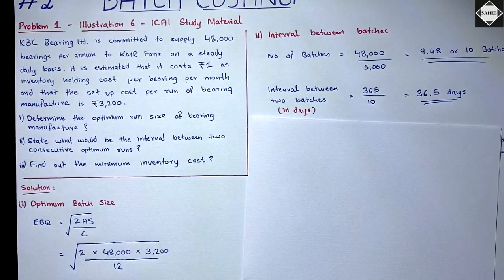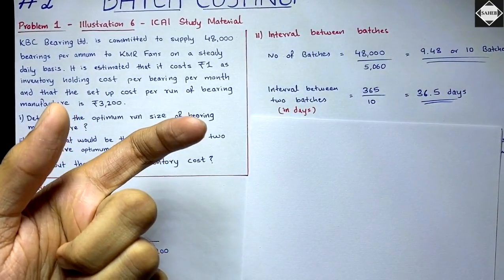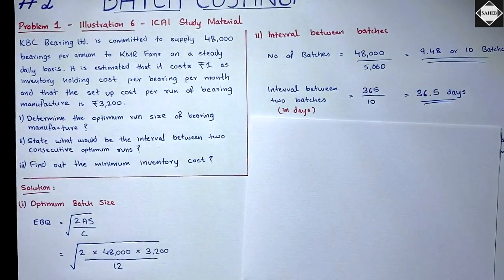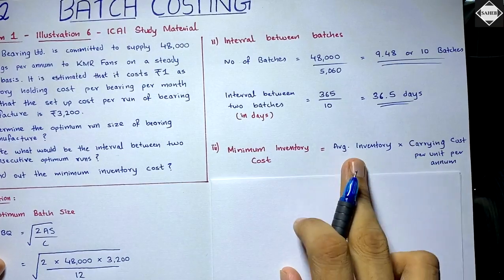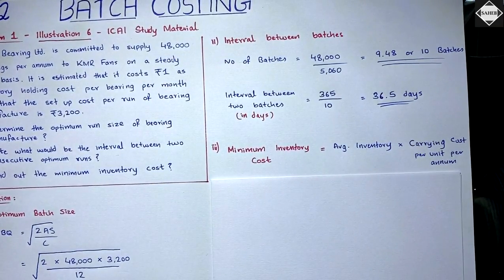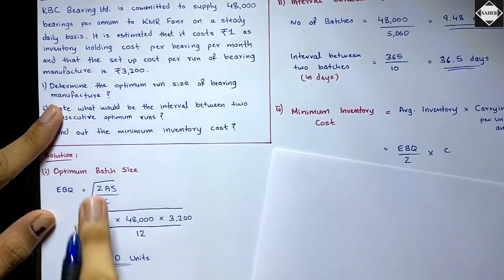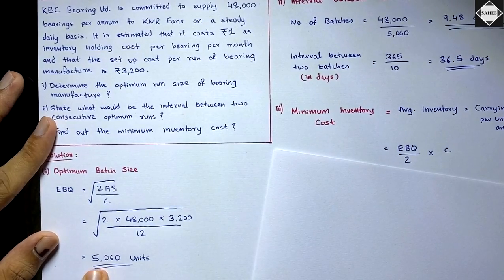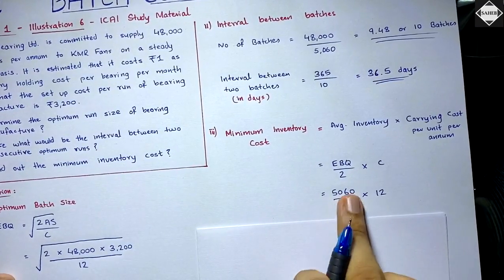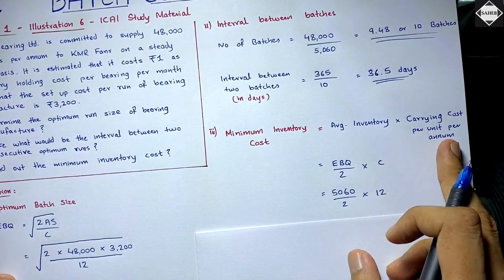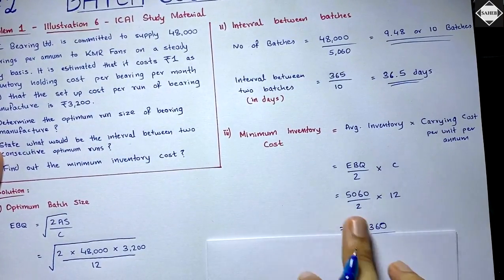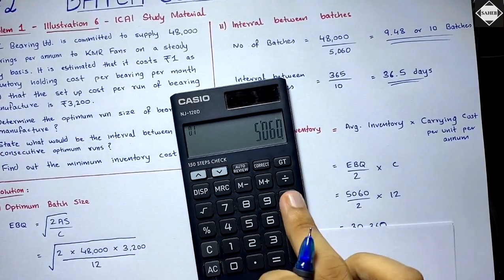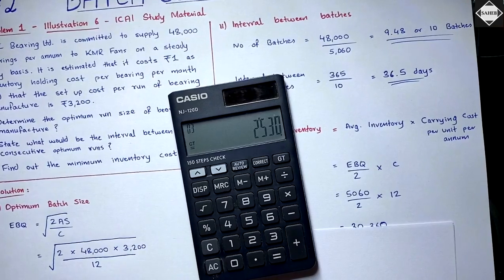The formula for total carrying cost is: average inventory × carrying cost per unit per annum. Average inventory = batch size ÷ 2. We don't have order size here; we have batch size of 5,060 units. So average inventory = 5,060 ÷ 2. The carrying cost per bearing per annum is ₹12.